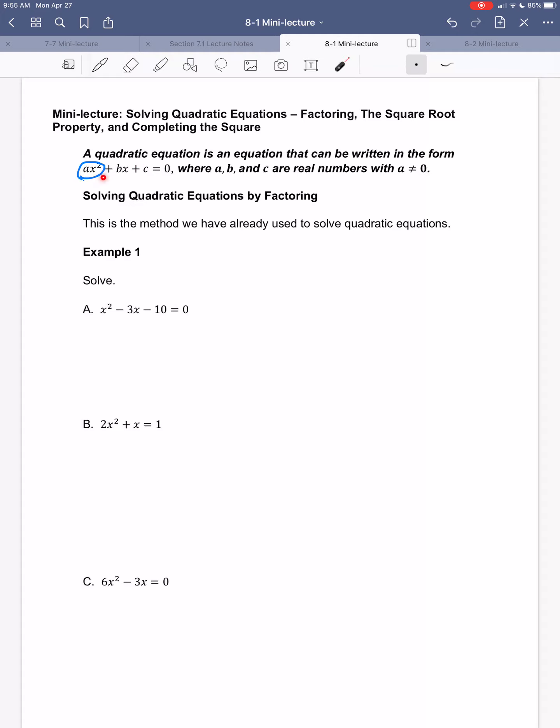So we can write it in this form. It may start in a different form, like here in part B. That doesn't look exactly like this because it's not equal to zero, but that would be pretty easy to fix. So the a, b, and c are just real numbers. Real numbers, so they can't involve an i. And it's important then that a is not equal to zero. If a were equal to zero, it would be zero times x squared, and then the x squared term would go away, and then it would no longer be a quadratic equation.